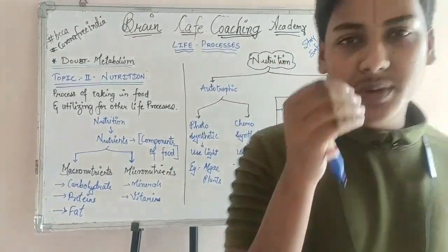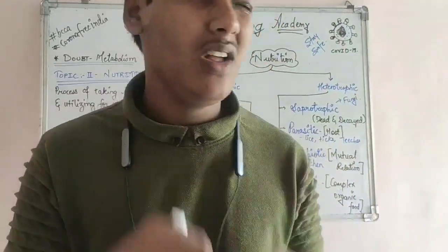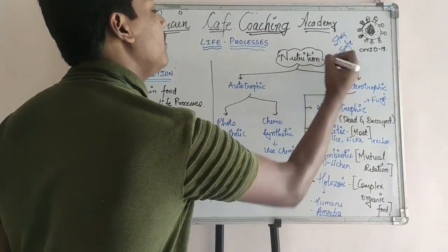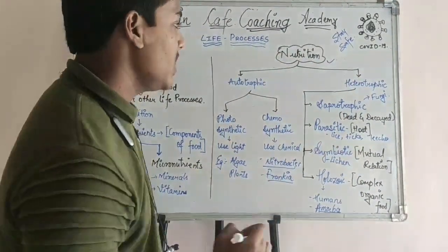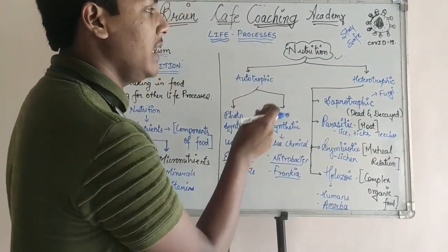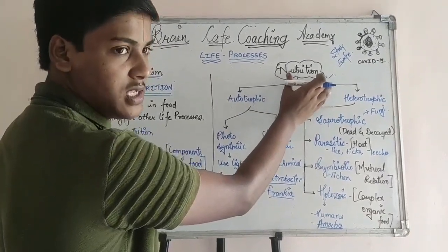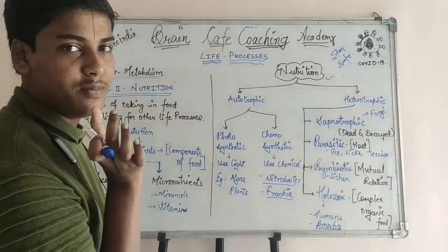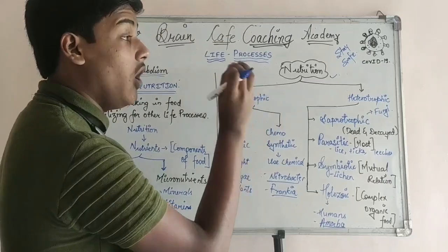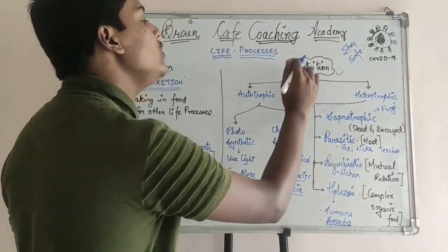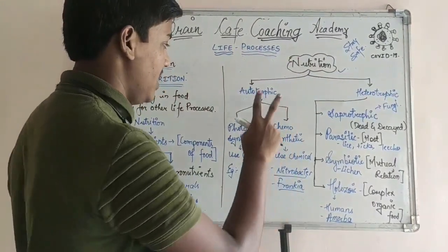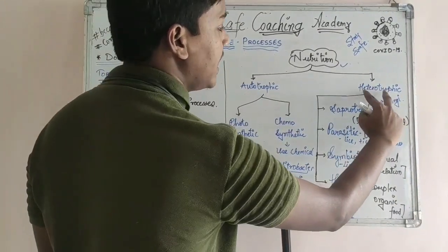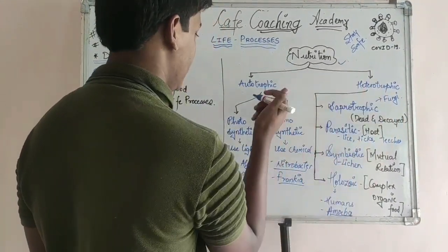Now, coming to the point that nutrition is not just a classification. Organisms carry out nutrition in two major ways: first, autotrophic nutrition, and second, heterotrophic nutrition.